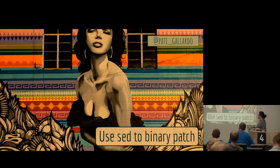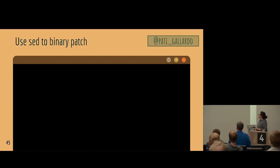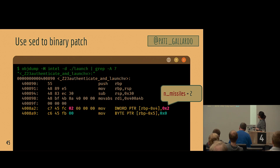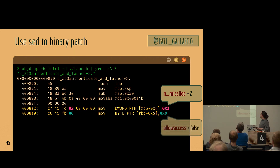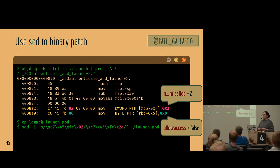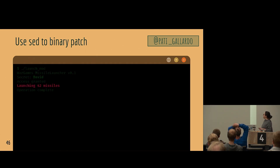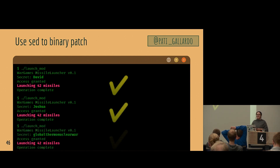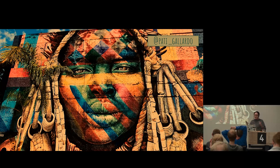Let's do something else — let's break it again. Let's do a binary patch, because that's also cool. It turns out this one byte sets the number of missiles, and this other byte sets whether allow_access is true or false. If we overwrite just those two bytes in the program binary, then suddenly we're always good. No matter what you write in, you'll always launch all the missiles.